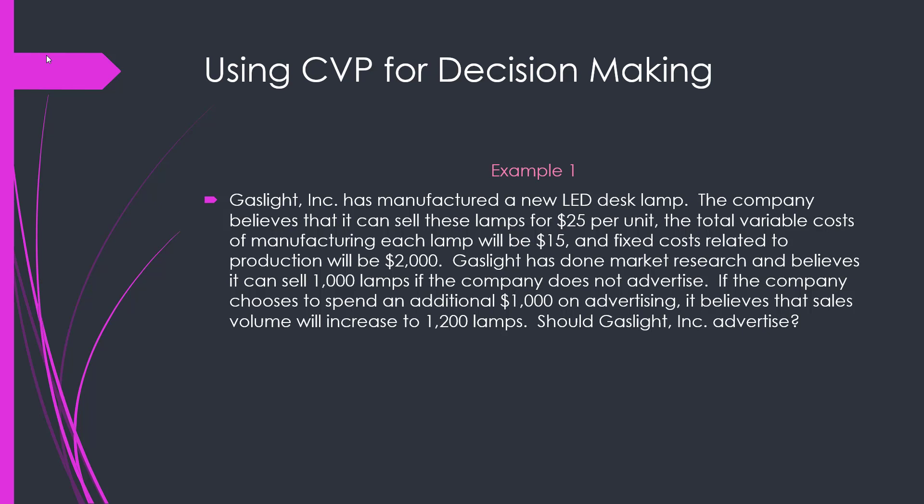In this video we're going to use CVP analysis to make a couple of business decisions. In the first example, Gaslight is going to manufacture a new LED desk lamp. The company believes that it can sell these lamps at $25 per unit and the variable cost to manufacture each lamp is going to be $15. Gaslight also believes that fixed costs related to production of the specific model will be $2,000.